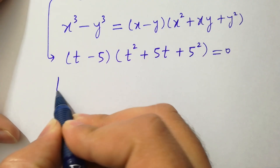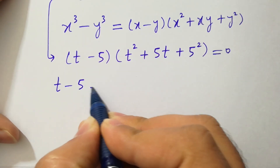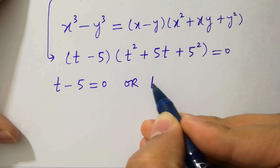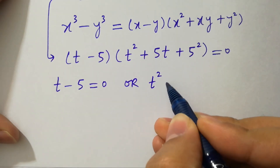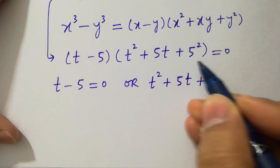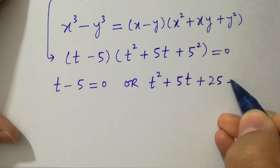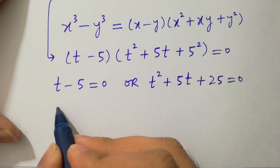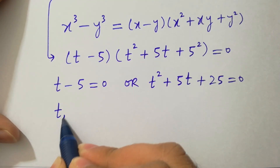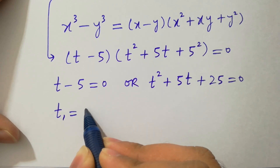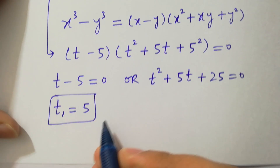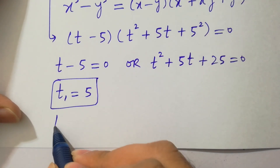So t squared plus 5t plus 25 equals 0. Here we get the value of t. We can say t₁ equals 5, which is our real solution.